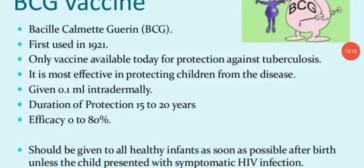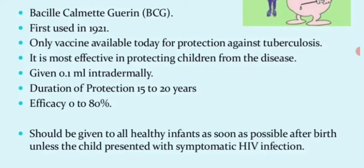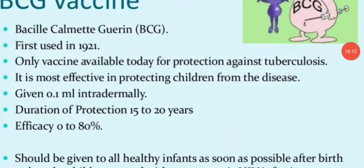The BCG vaccine (Bacillus Calmette-Guérin) is used for prevention. First used in 1921, it is the only vaccine available against tuberculosis and is most effective in protecting children. Protection duration is 15-20 years. It consists of live tuberculosis bacilli with attenuated virulence — a live attenuated vaccine. The dose is 0.05 ml for newborns to one year old, administered intradermally on the front of the left upper arm.